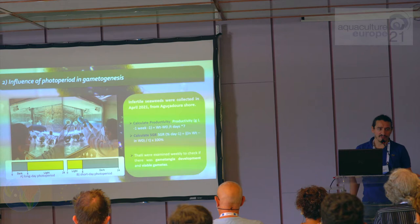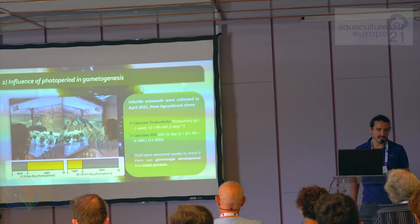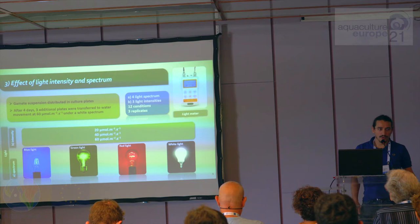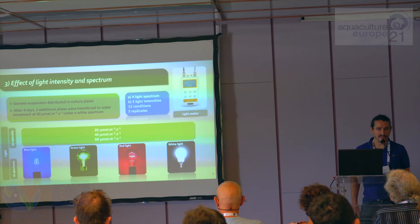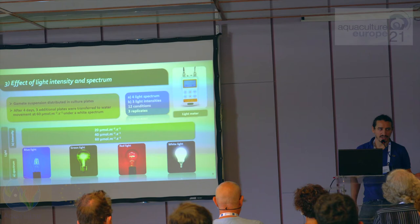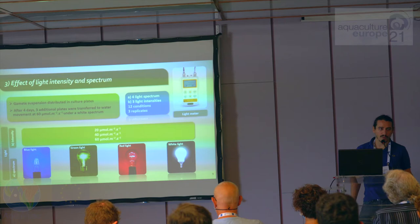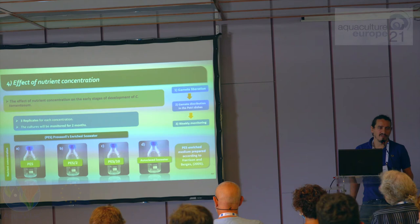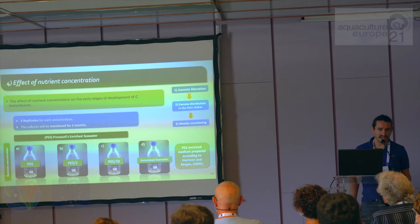For inducing gametogenesis, we ran a photoperiod experiment with long-day and short-day photoperiods, as photoperiod is a primary parameter for controlling reproduction in algal species. We also looked at the effects of light spectrum and intensity on early stages of development, exposing gametes to different light intensities from 20 to 60 micromoles per meter squared per second and also blue, green, red, and white lights. Additionally, we examined the effect of culture media, selecting f/2 PESH and diluted versions to assess growth performance and contamination.